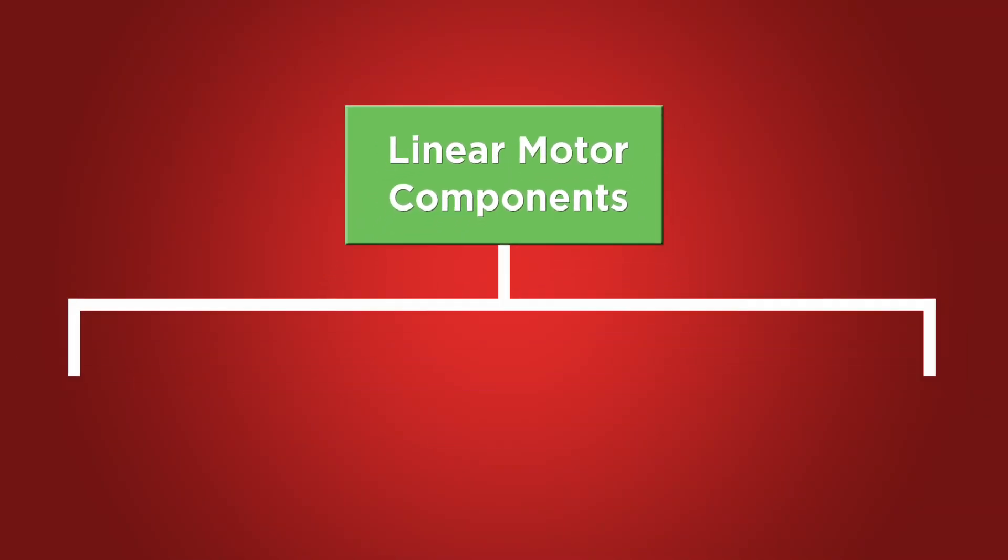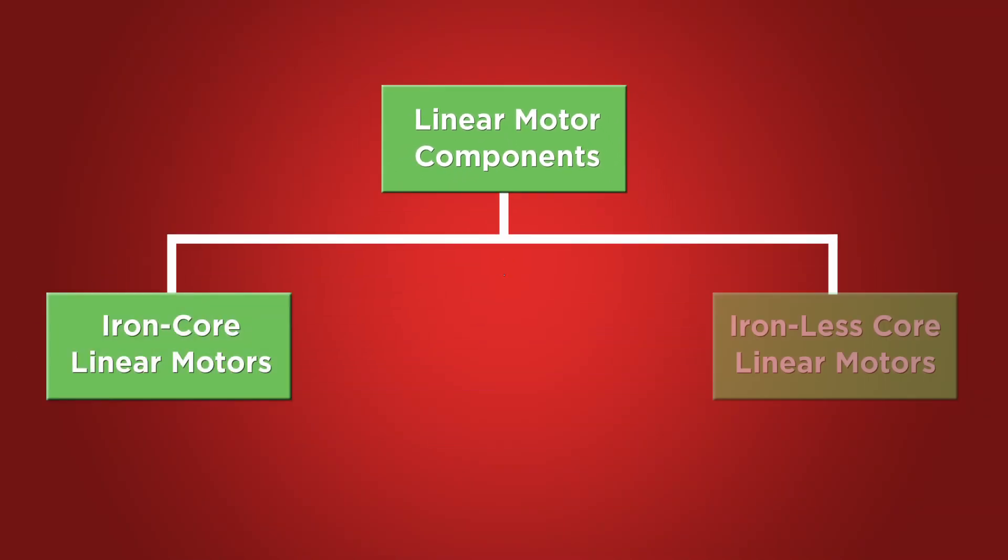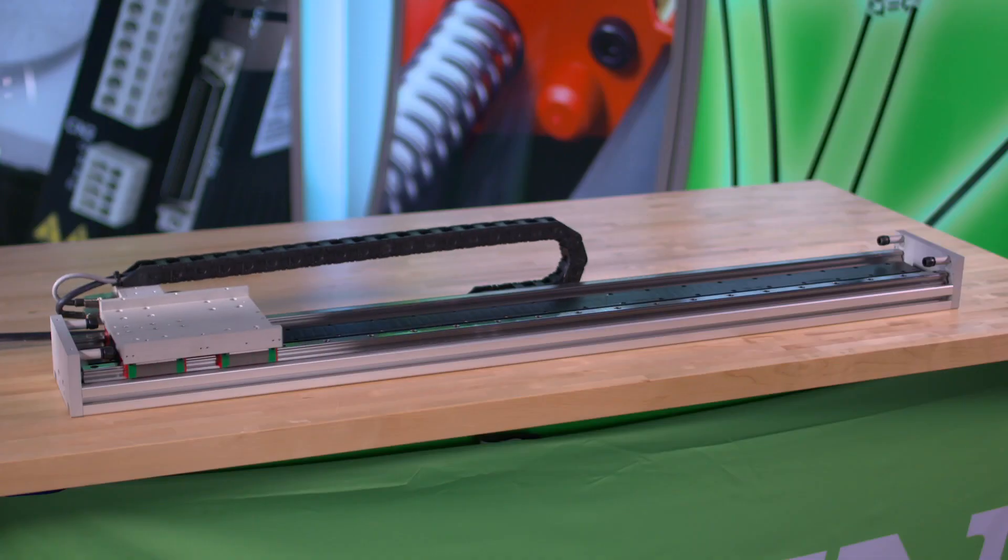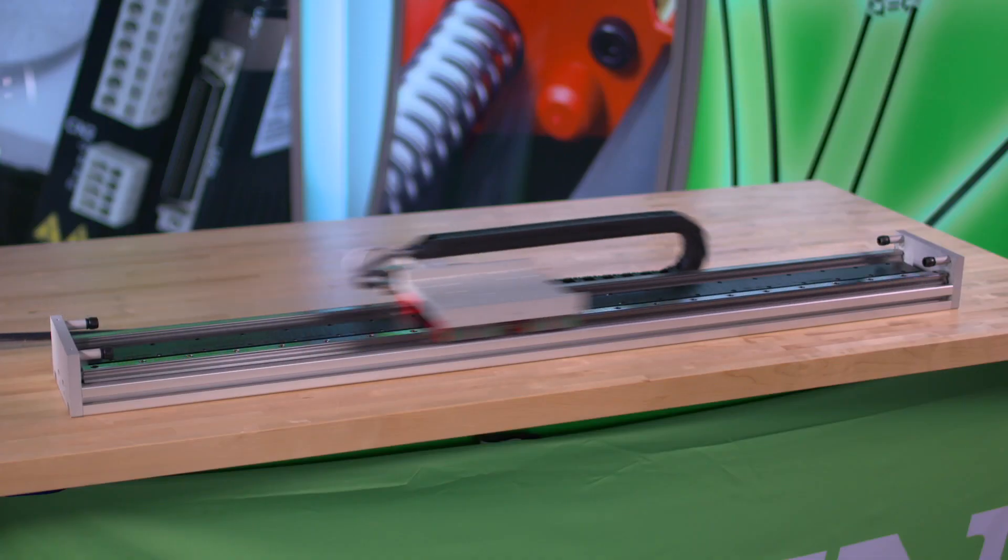Hiwin offers two types of linear motor components: iron core and ironless. Iron core motors are ideal for high speed, high acceleration point-to-point applications.